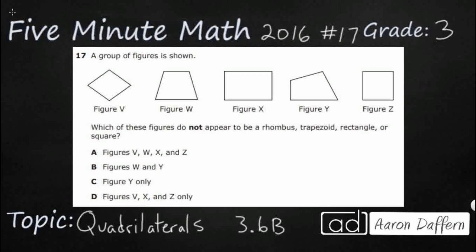So quadrilaterals is just a big term that means a four-sided shape because quad means four. So we've got many different four-sided shapes: rhombus, trapezoid, rectangle, square.